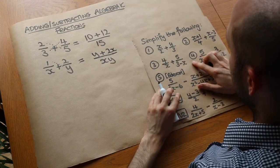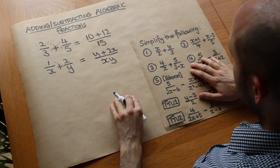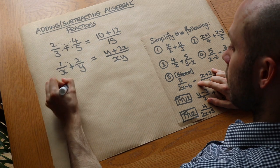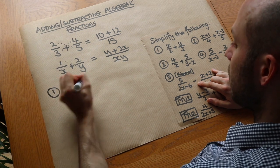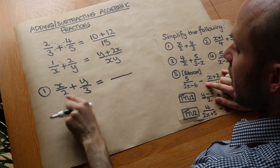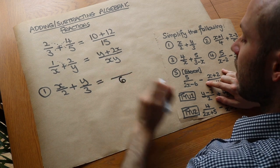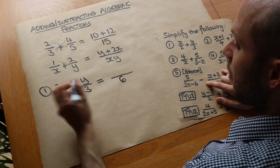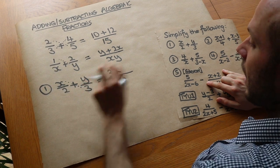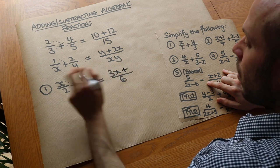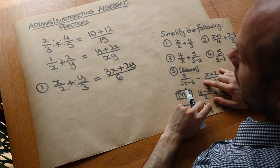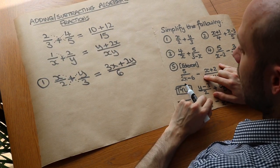Now let's do some examples, simplifying the following by combining them into a single algebraic fraction. Question 1: we've got x over 2 plus y over 3. We do what we did before — we can do it as a single fraction immediately. 2 times 3 is 6. Then x gets diagonally multiplied by 3, which is 3x. We've got add. And then y gets diagonally multiplied by that 2, which is 2y. That's our final fraction — we can't simplify it any further.